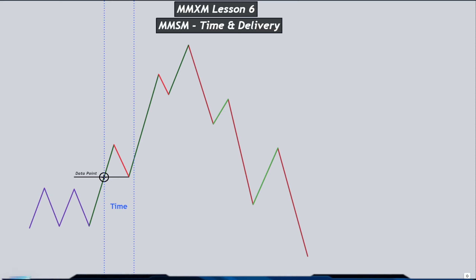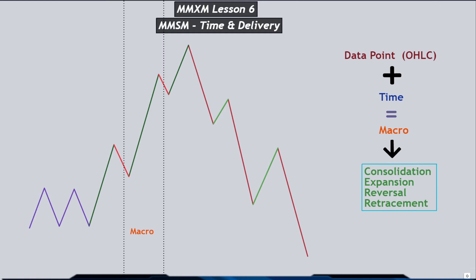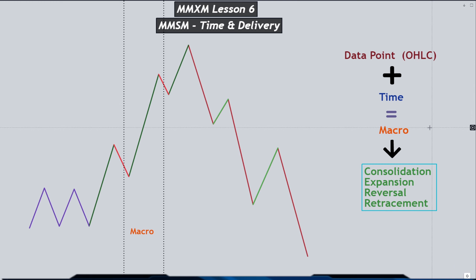The market maker model runs on a time element that aligns or blends with price. Specifically when we are talking about a market maker model, we are looking into the left side of the chart where we already have the printed candles — where we have the open, high, low, close as our data points. Price will often refer back to the data point inside of a specific time window, and when the time and the price delivery meets with the data point, the algorithm then sends a set of instructions to do one of the four things: consolidation, expansion, reversal, or retracement. Essentially, this is what a macro is.